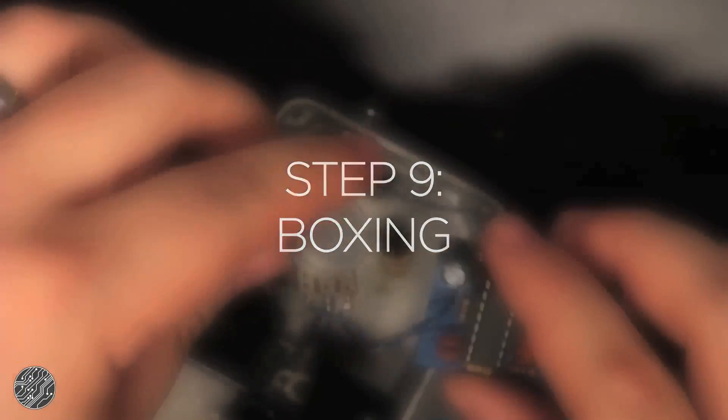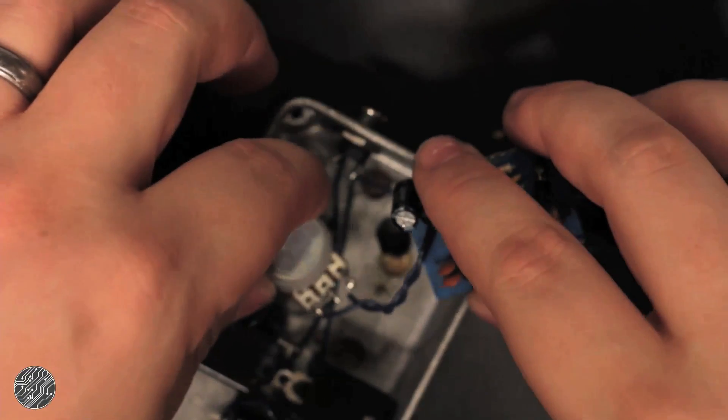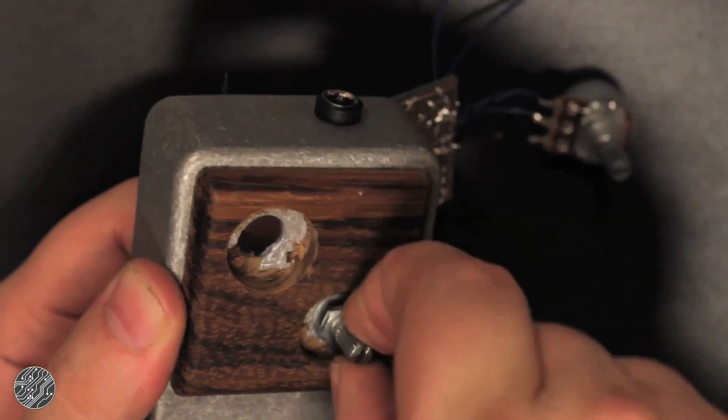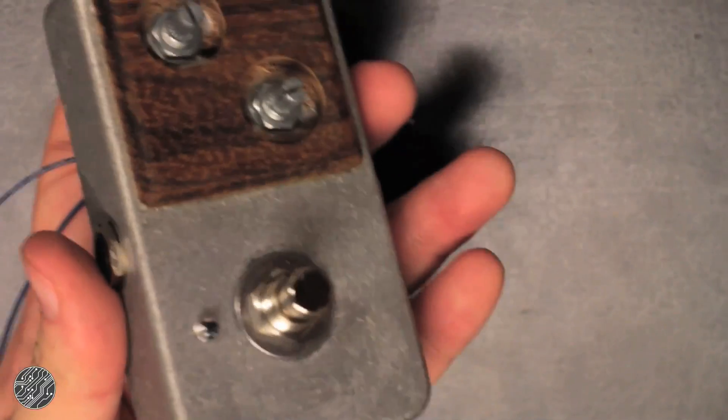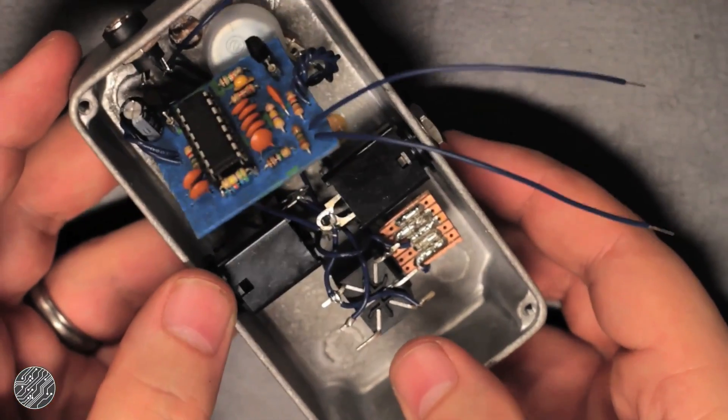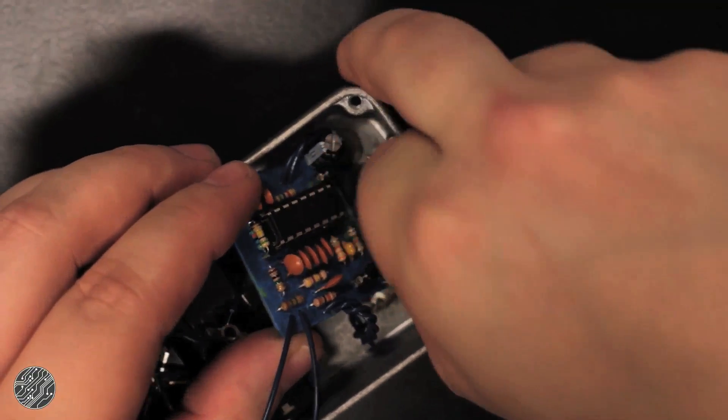Step nine: boxing. I already have my switching and jacks wired up and it's ready to receive the board and pots. First, I fix the pots to the enclosure, making sure there's enough slack with the wires from the pots to the board so I can still solder to the underside of the board as needed.